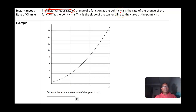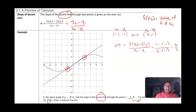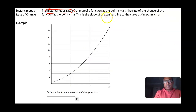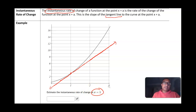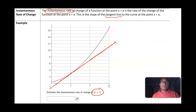The instantaneous rate of change at the point x equals a is the rate of change of the function at that point — it is the slope of the tangent line to the curve. A tangent line is different from a secant line. A secant line passes through two points of a curve, intersecting it at two different places. But a tangent line touches the curve only at one specific point and nowhere else — that is the definition of a tangent line.